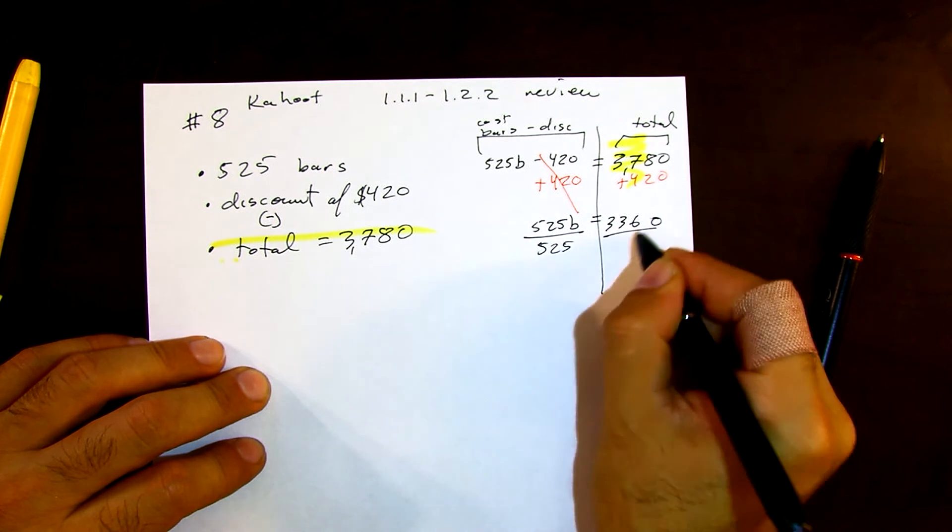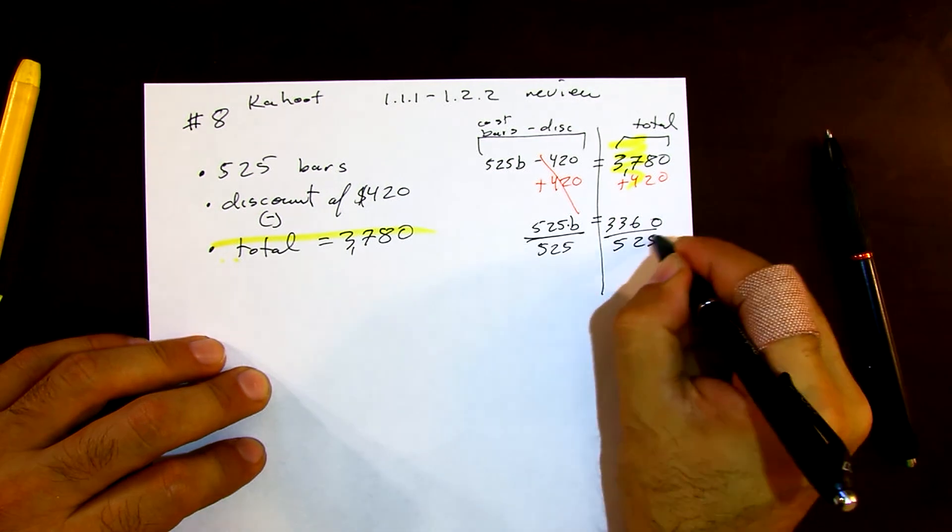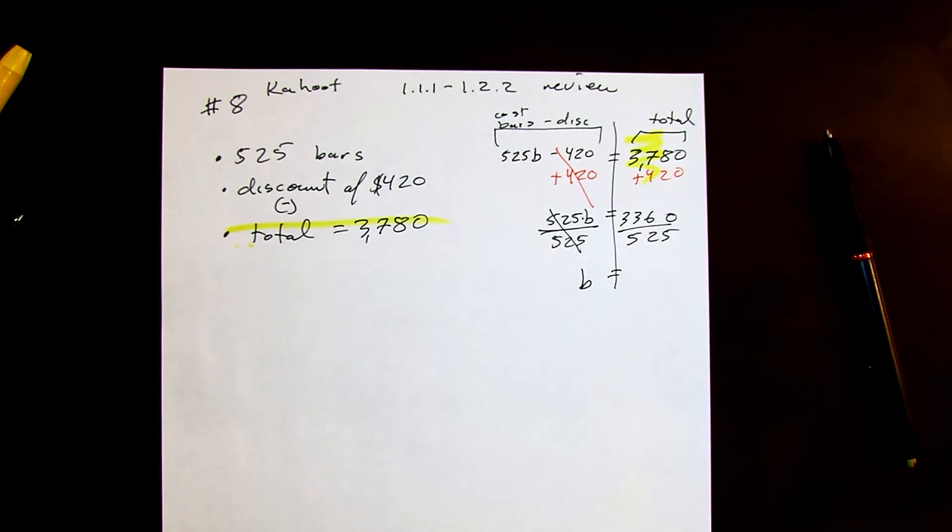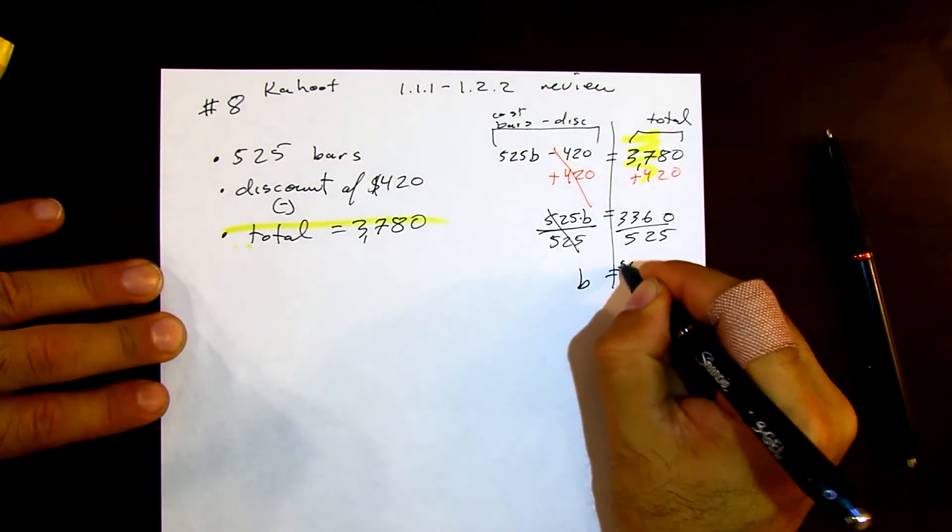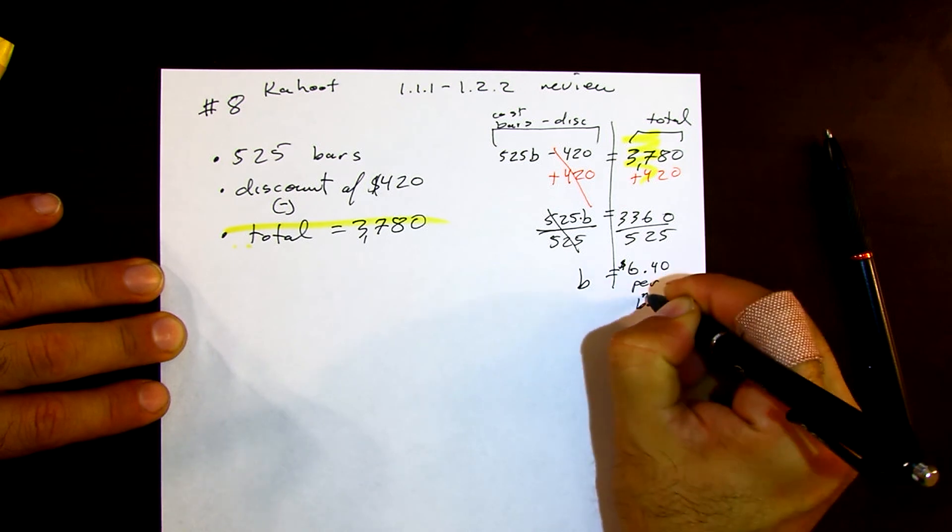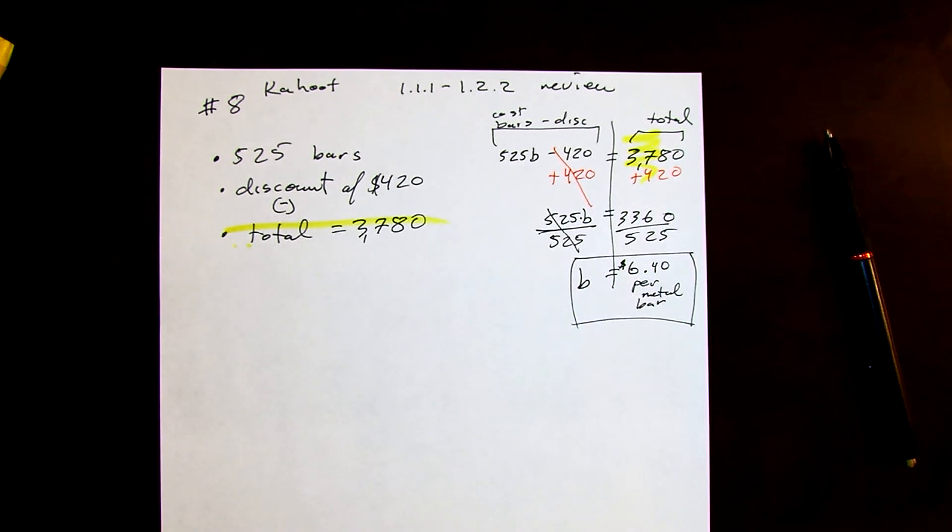Whatever you're doing, it's 525 times B, so we divide by that amount. Make sure you put this in your calculator. I get $6.40 per metal bar, and that would be my answer.